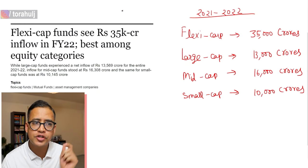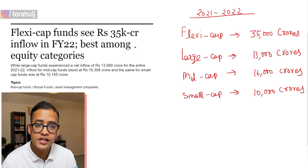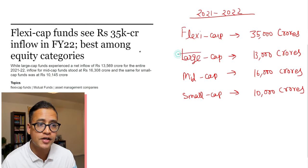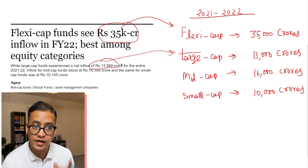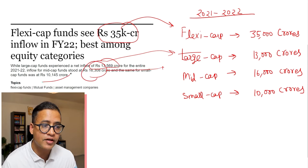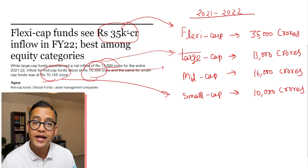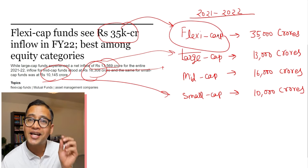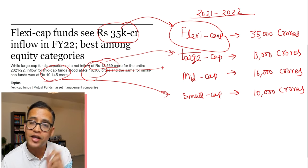Let's understand the current market trends on mutual funds. Looking at the latest data on screen, flexi cap mutual funds attracted 35,000 crore rupees in year 2021-22, while large cap mutual funds only attracted 13,000 crores. Mid cap attracted 16,000 crores and small cap only 10,000 crores. We can clearly see a trend that flexi cap mutual funds have attracted the maximum investment in equity.